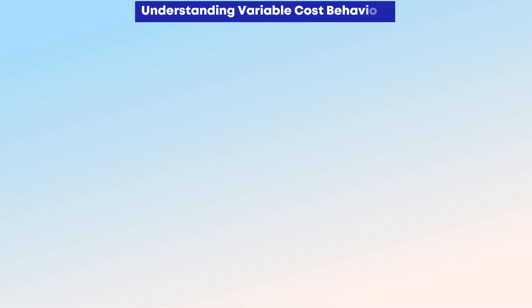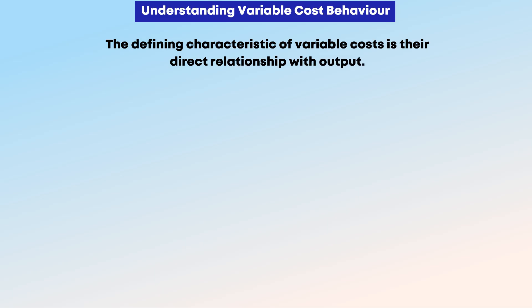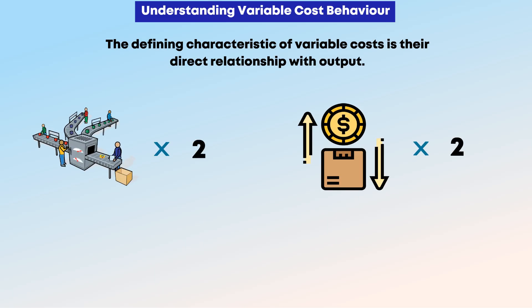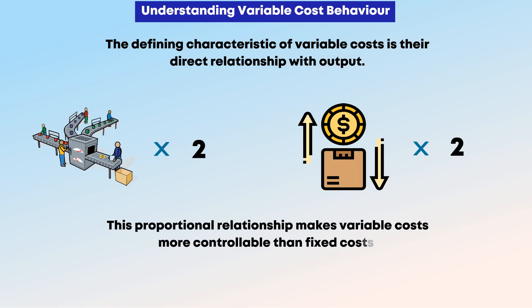Understanding variable cost behavior: The defining characteristic of variable costs is their direct relationship with output. If you double your production, your variable costs should roughly double as well. This proportional relationship makes variable costs more controllable than fixed costs, but also less predictable.